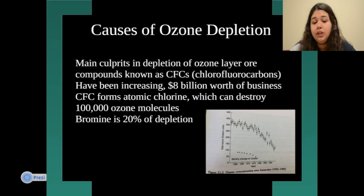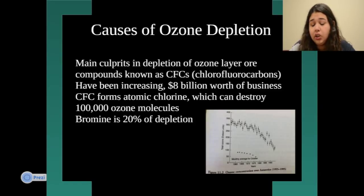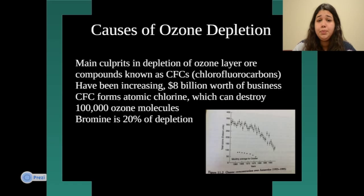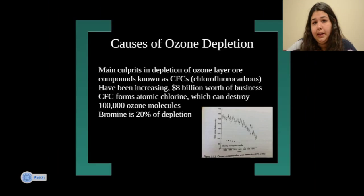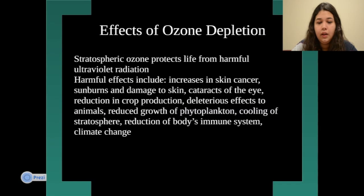There's also bromine, which is accountable for 20% of ozone depletion. I have a figure showing ozone concentration over Antarctica, illustrating how ozone has been depleted over the years. These are some of the main culprits of ozone layer depletion.